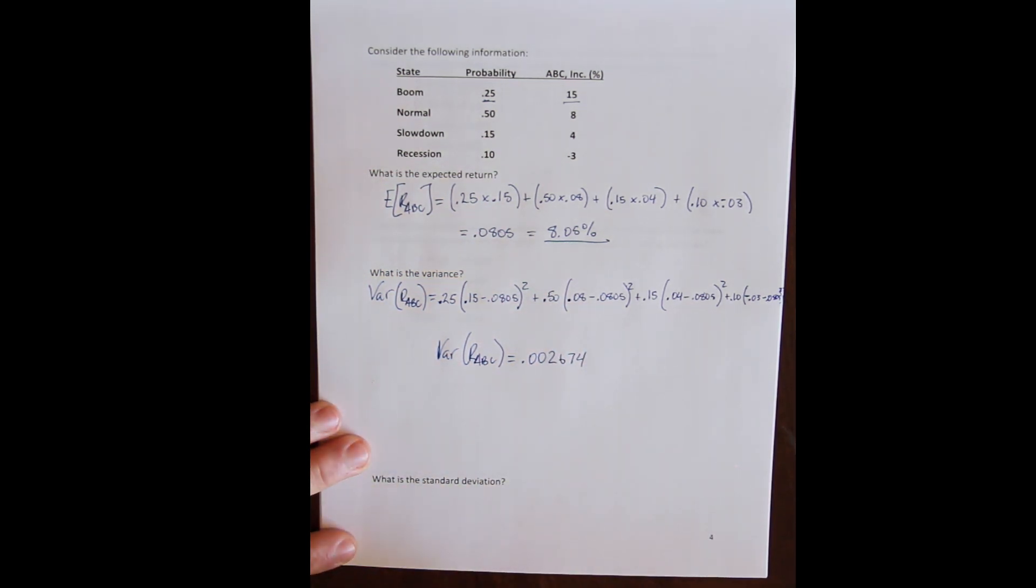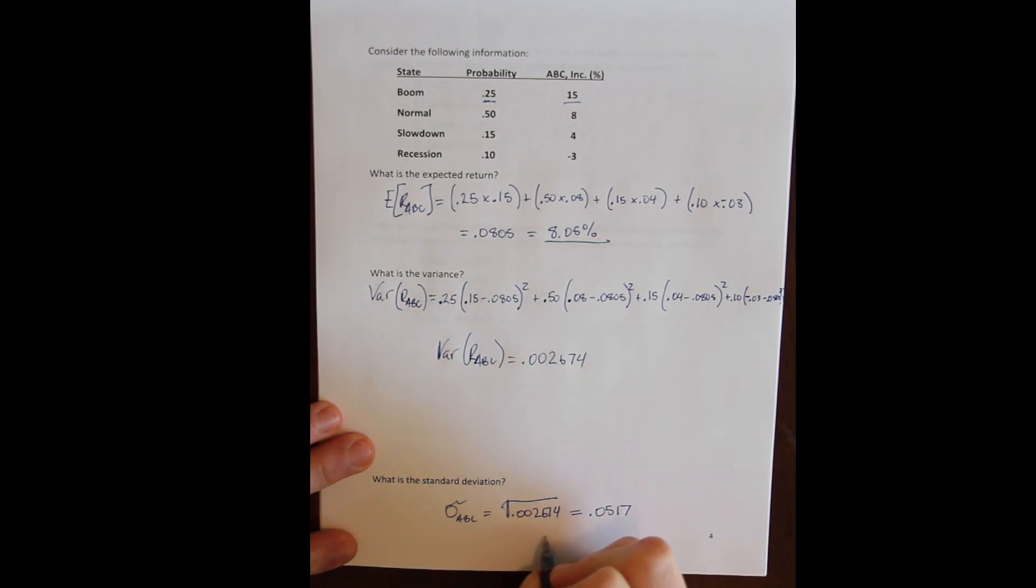And then the standard deviation is the square root of the variance. So the standard deviation for ABC is the square root of 0.002674, and that is 0.0517 or 5.17%.